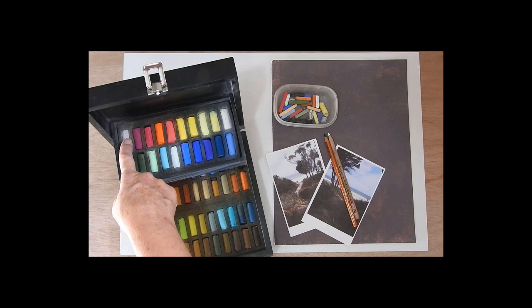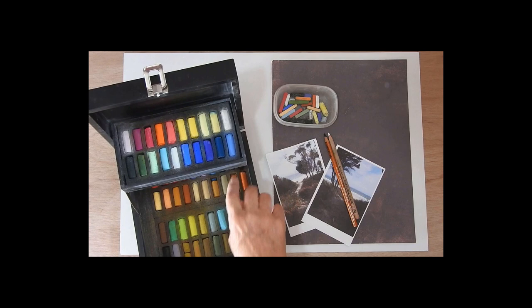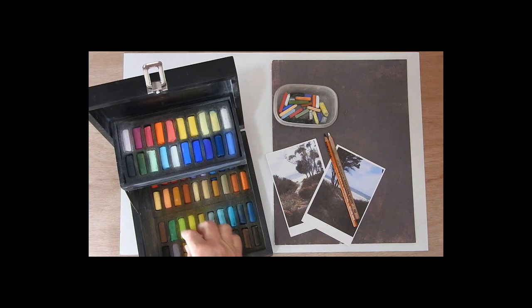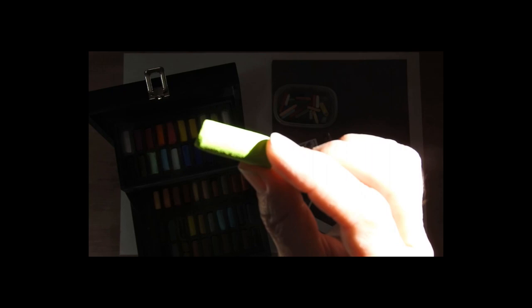It's got some that you could use for the sea, some for the sky, and some ones you can use for grayed off clouds and a couple of quite good darks in there as well. So it's a really good little selection and you can see that these are half sticks.